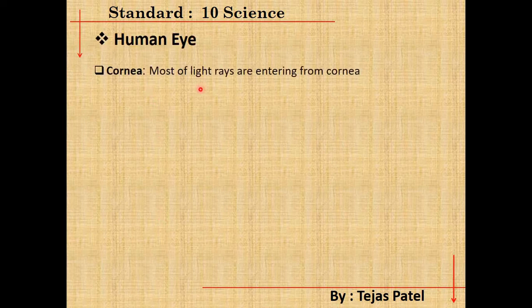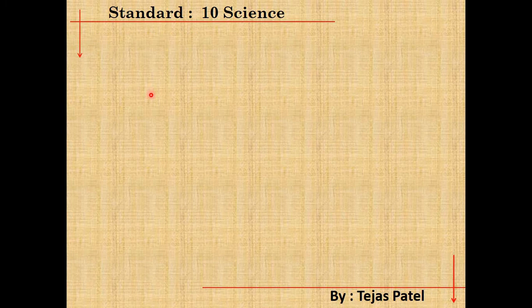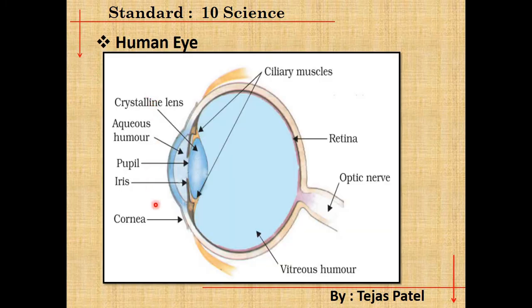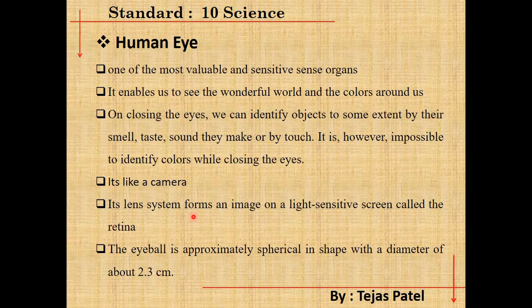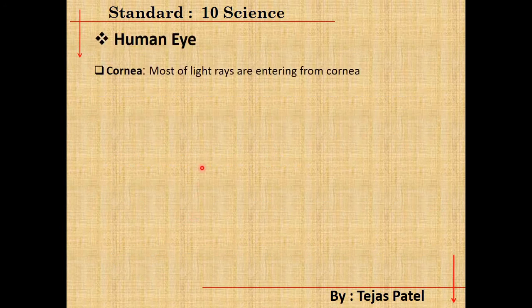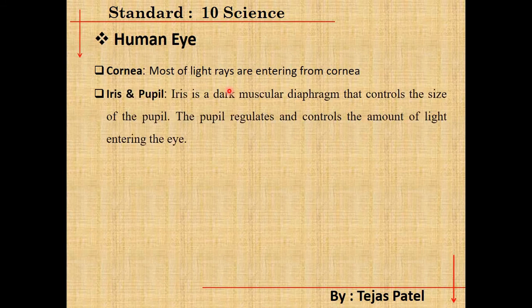The first part is the cornea. As shown in the figure, the cornea is the outer surface of the eye. Most of the light rays enter the eye through the cornea.